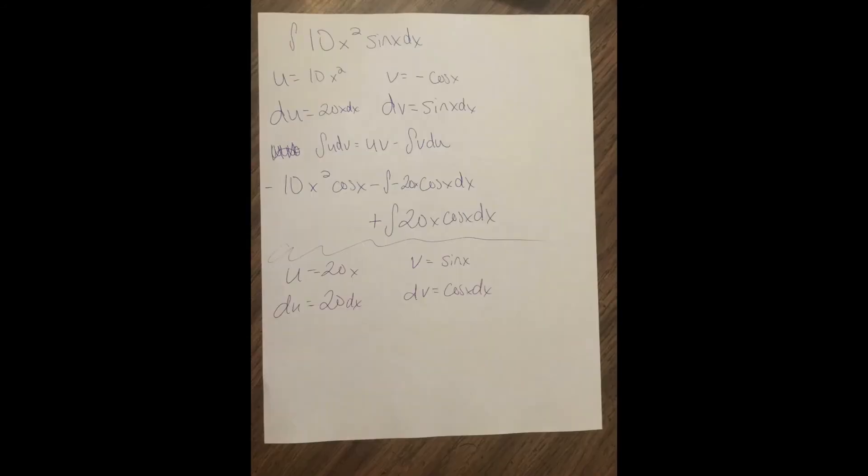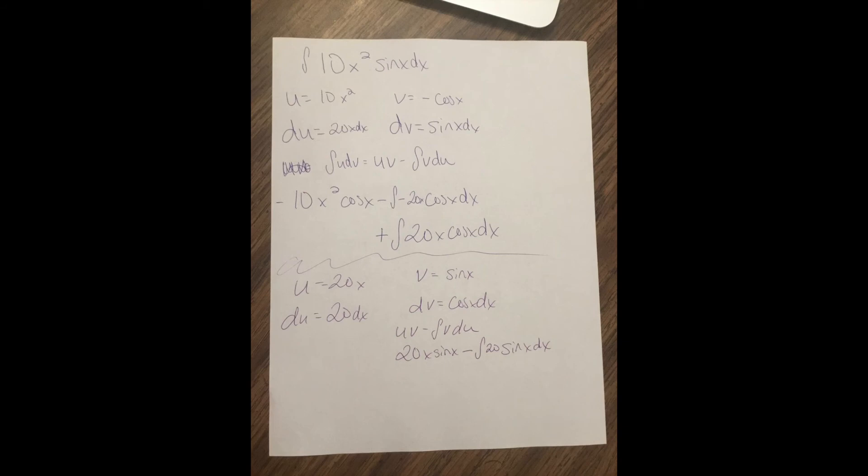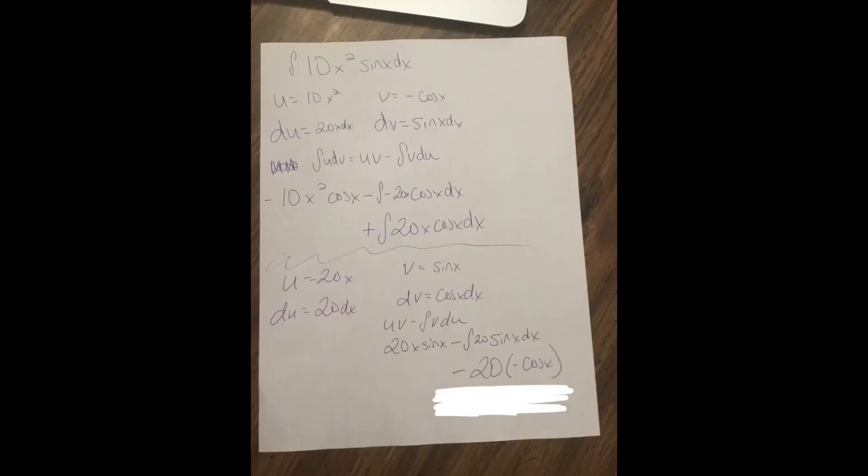We follow the same guidelines. We'll make the polynomial u, and we'll make the rest of it dv. Then with that chunk, we do integration by parts again, so we do u, v minus the integral of v du.